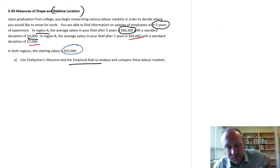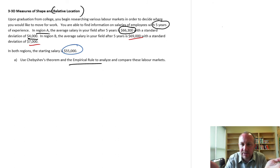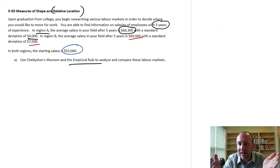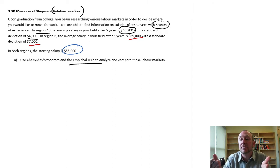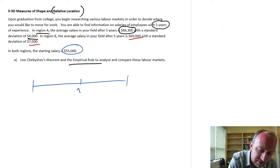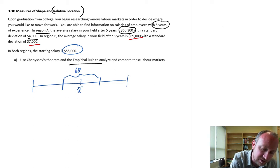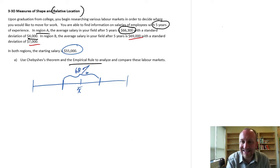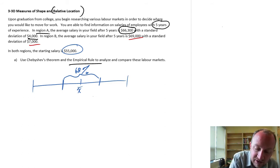So where do you want to work? How can we use the empirical rule to analyze and better understand these labor markets? The empirical rule is relatively straightforward. It means that sixty eight percent of the values in a particular data set — sixty eight percent of observations — are within one standard deviation from the mean.